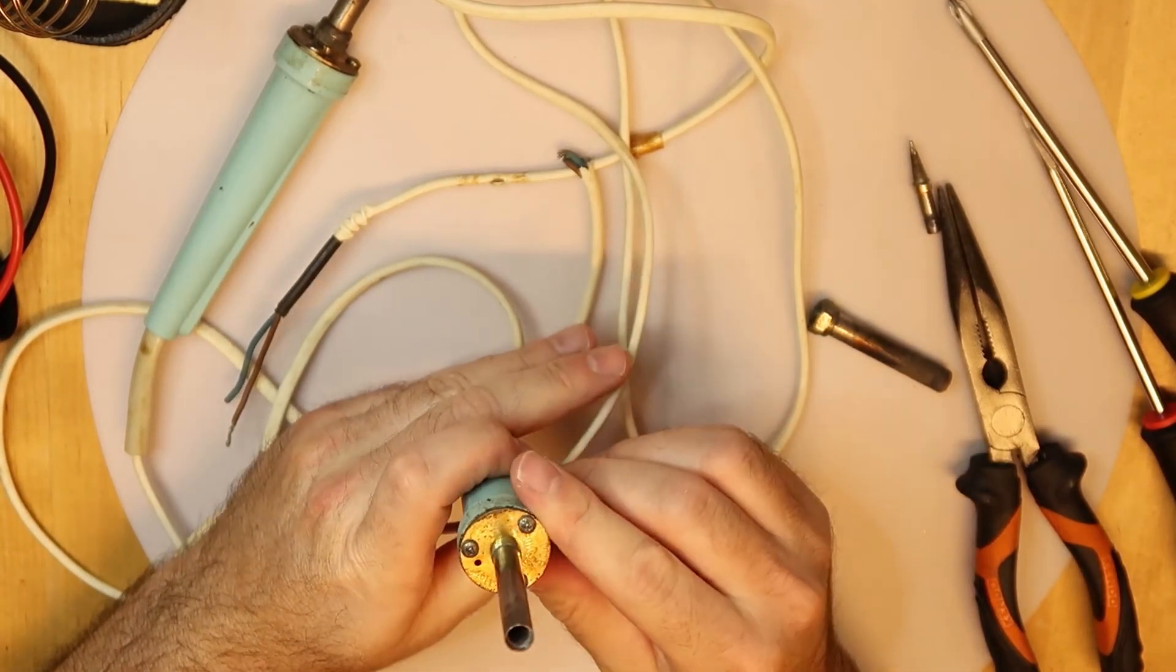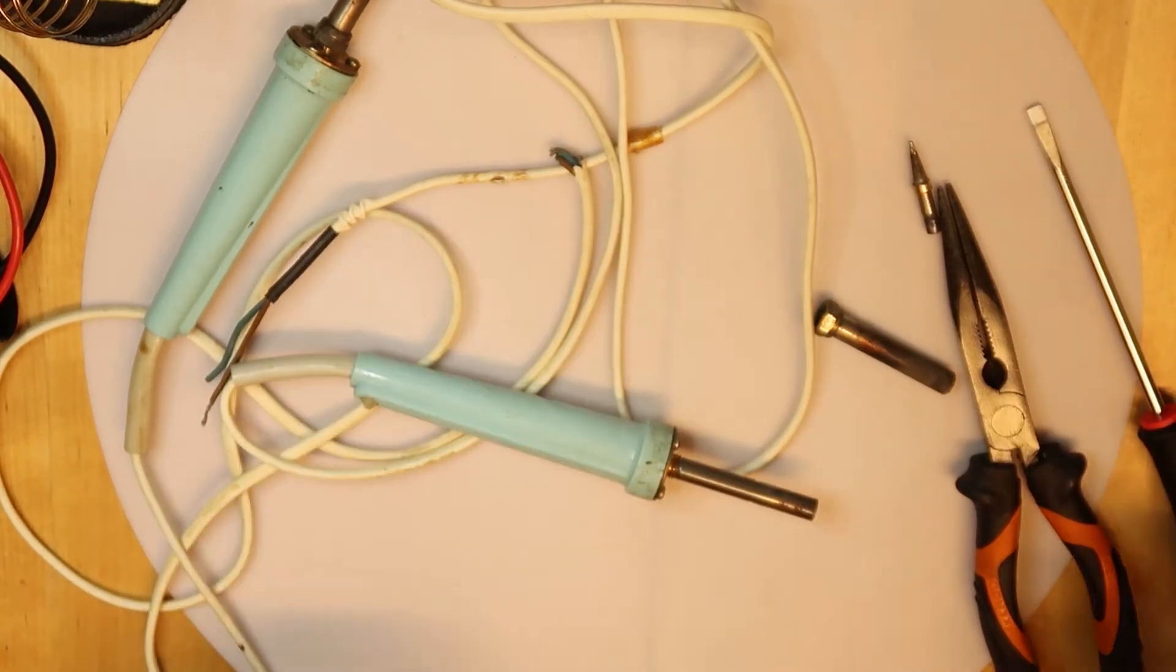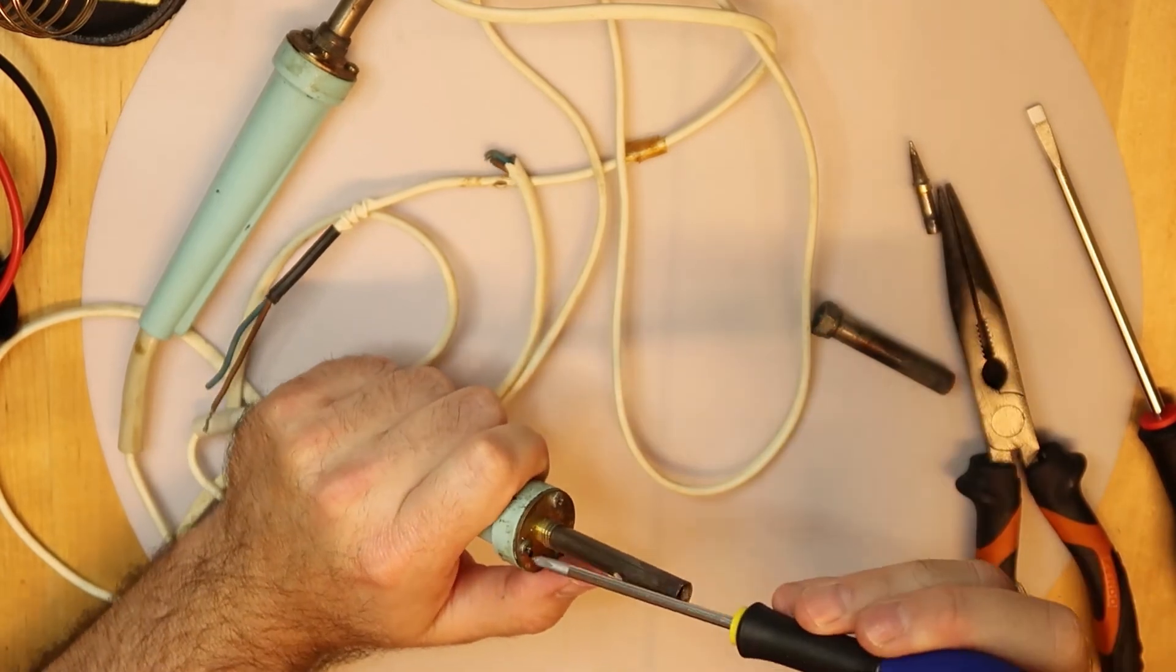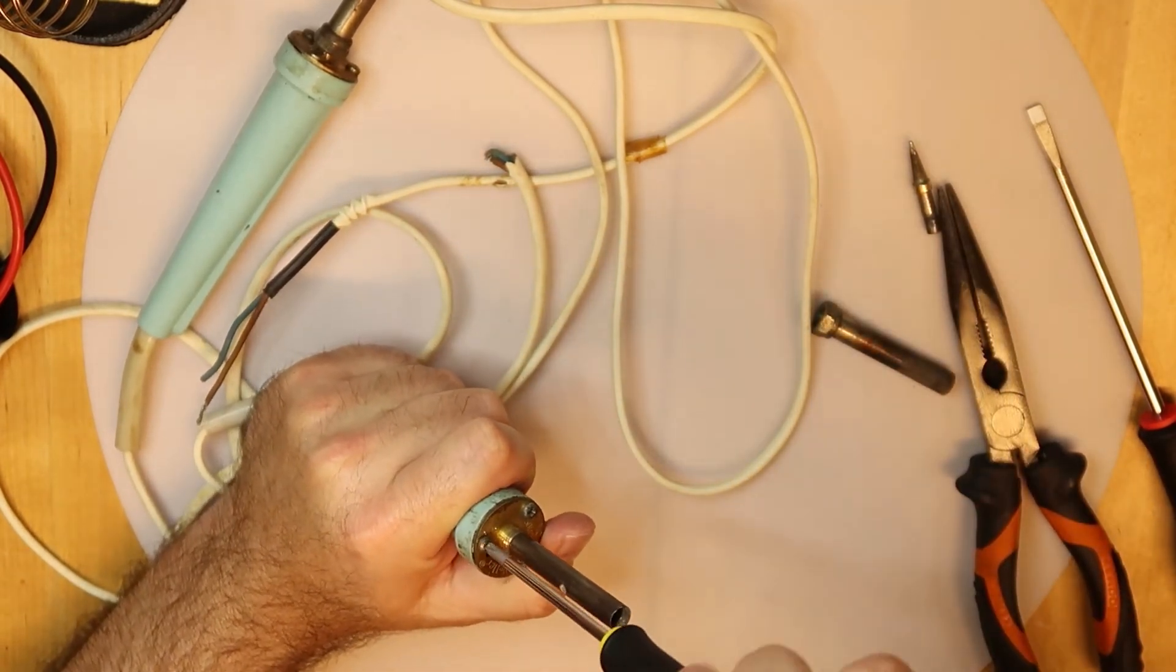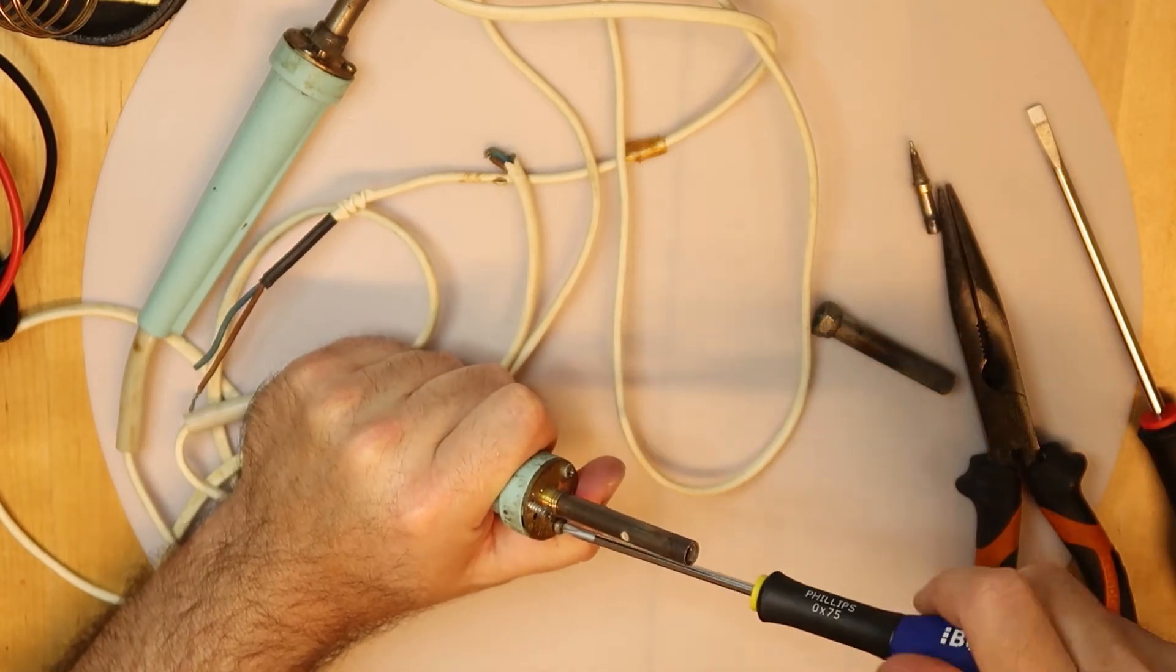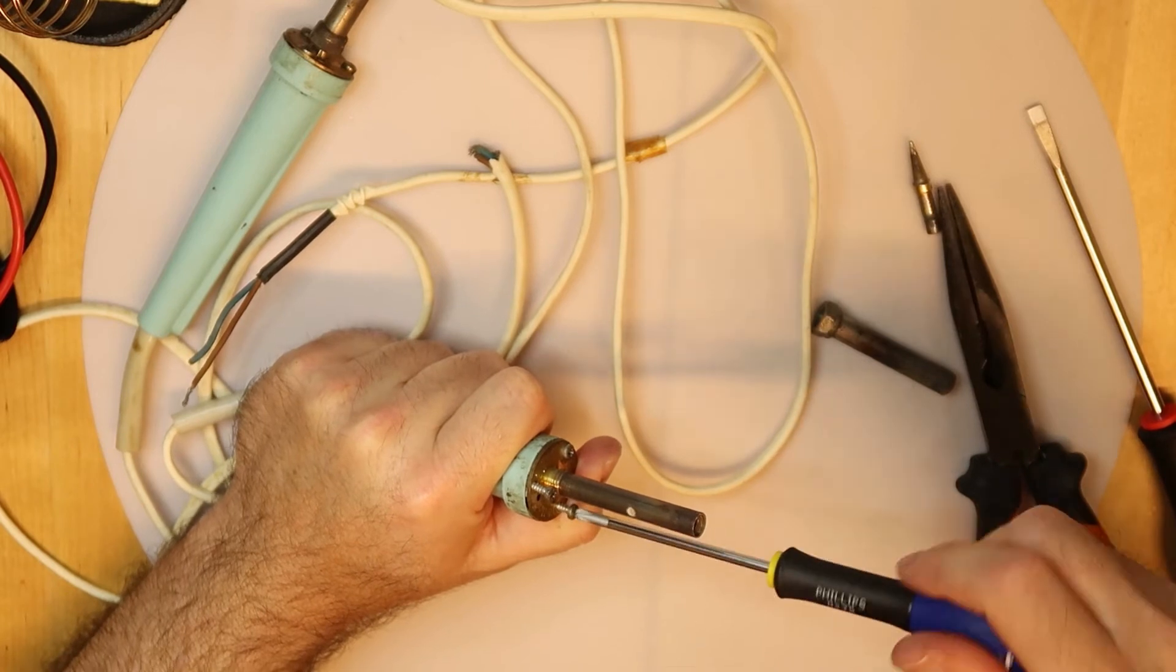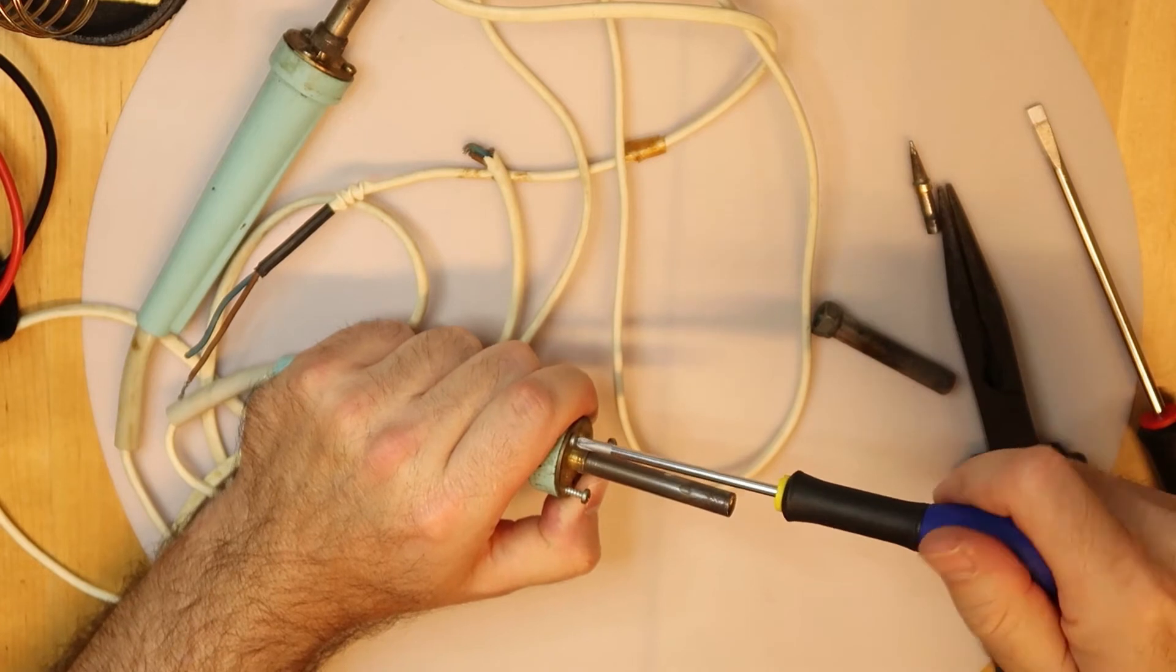What you should do in this soldering iron is open this plastic so we can push it, and then you have just three Phillips screws. I did it so many times when I was a child trying to fix this soldering iron, so I have a déjà vu of 40 years ago.